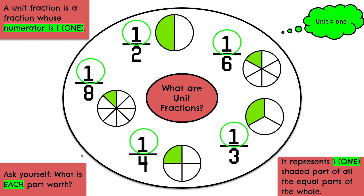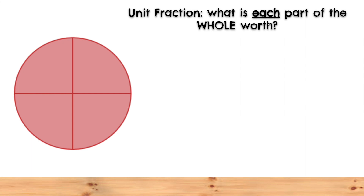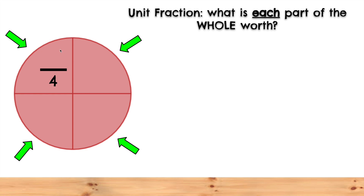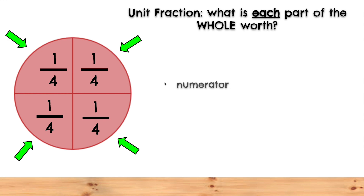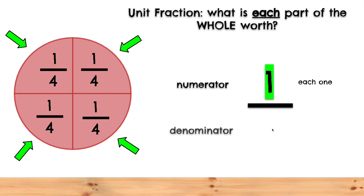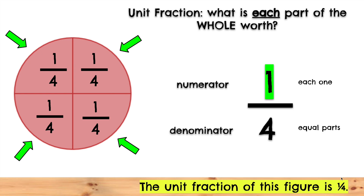Ask yourself: what is each part worth? Unit fraction — what is each part of the whole worth? Here we have a whole. We need to figure out what each part of this whole is worth — just one of them. Let's count how many equal parts: 1, 2, 3, 4. The denominator will be 4; each one is worth 1 fourth. Remember, unit fractions must have a 1, so each one is always going to be worth 1 over our total, which is our denominator below the fraction bar. We have 4 equal parts, so the unit fraction of this figure is 1 fourth.